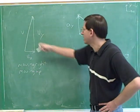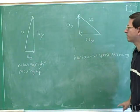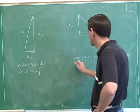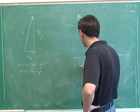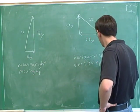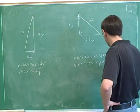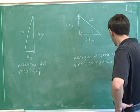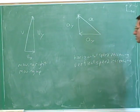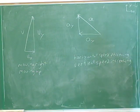Our vertical speed — well, A sub Y is up and V sub Y is also up, so A sub Y is parallel to V sub Y, meaning our vertical speed is increasing. Our vertical speed is increasing because A sub Y and V sub Y are both parallel to each other. So vertically, we're speeding up.